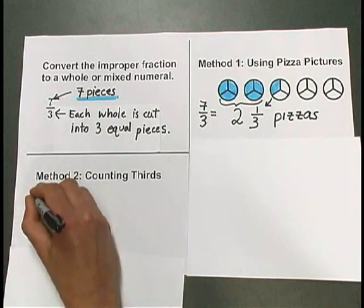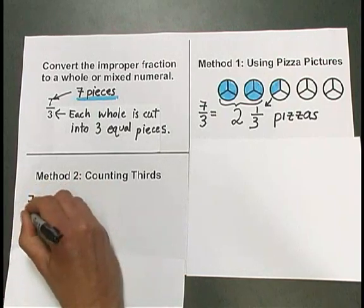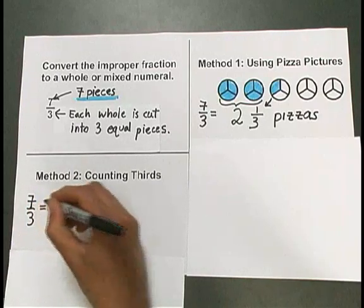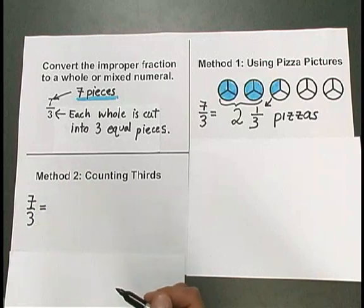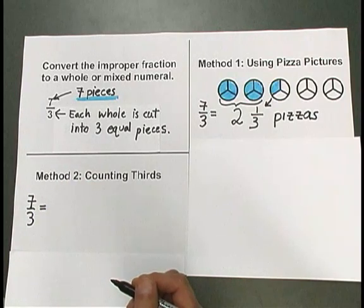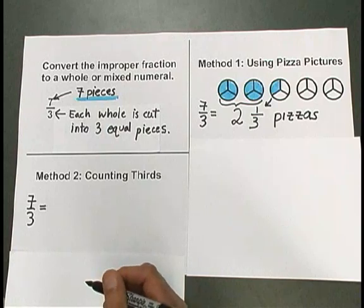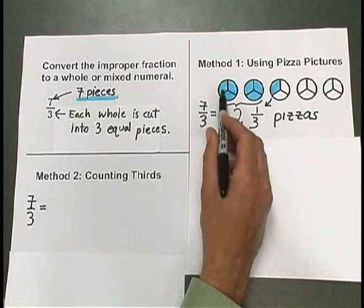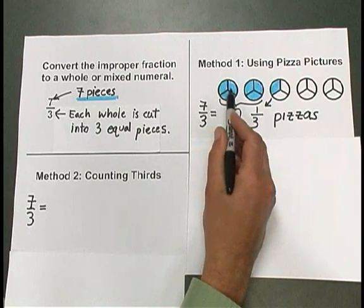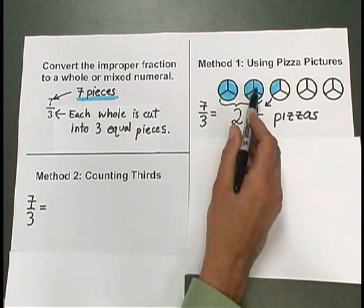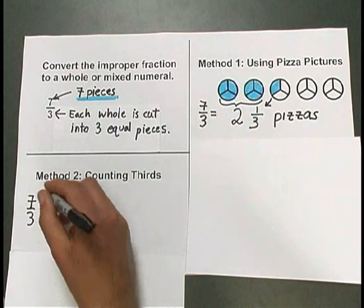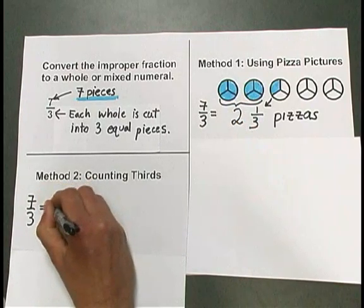If we take 7 thirds, we can think of that as representing 7 copies of a third or 7 copies of 1 third. Each copy of 1 third corresponds to a piece of pizza,